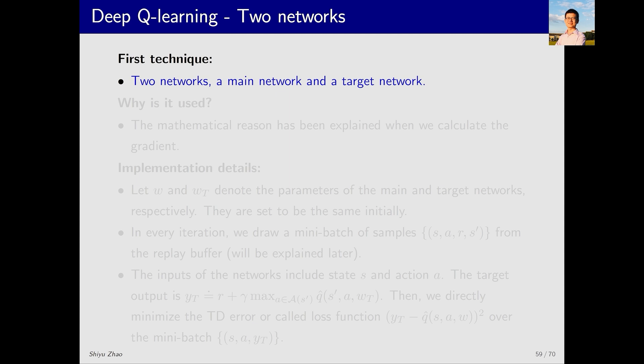The first technique is that it uses two networks instead of one, the main network and the target network. Why use two networks? We already explained just now. Let's repeat the reason briefly. Mathematically, calculating the gradient can be very complex, so we first fix one network and then calculate the gradient for the other. This necessitates having two networks, or two functions, to implement this process.